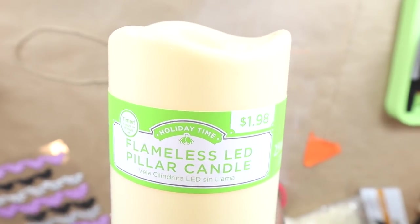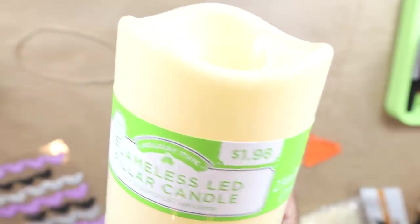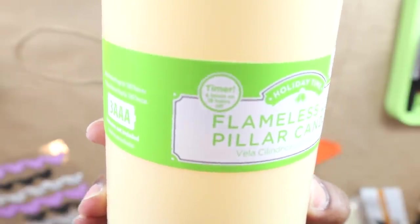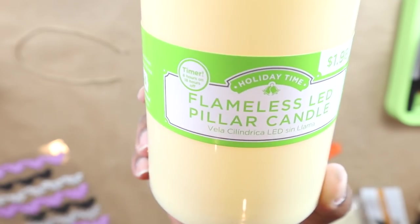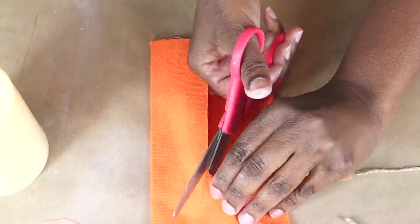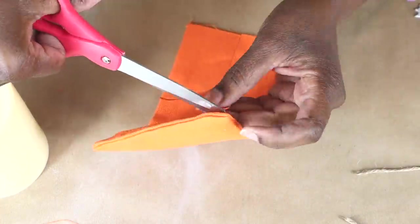These LED candles, like I said, are from Walmart. They are two dollars. And they use three AAA batteries. And they also have a six hour timer. So I just went ahead and repeated the same step for the second LED candle.